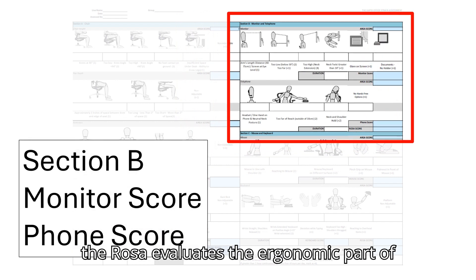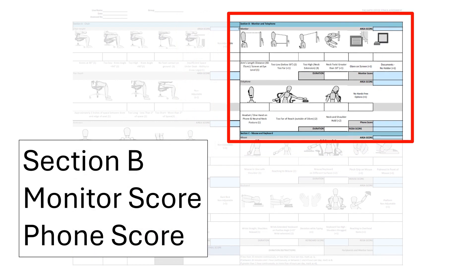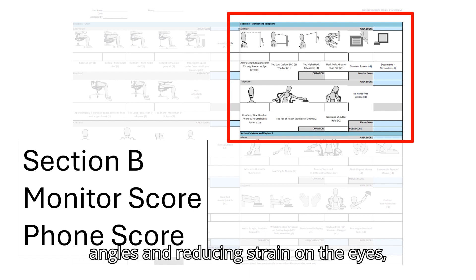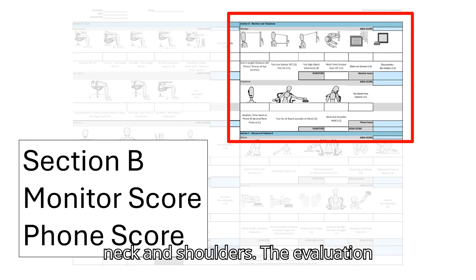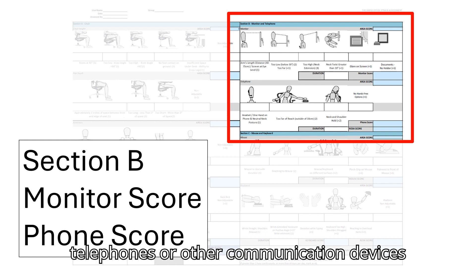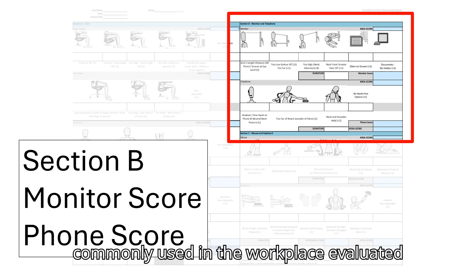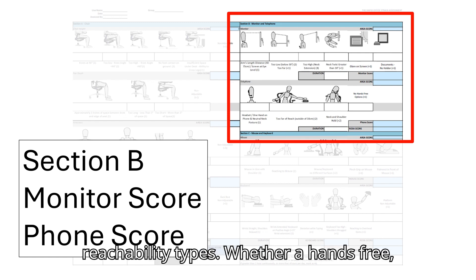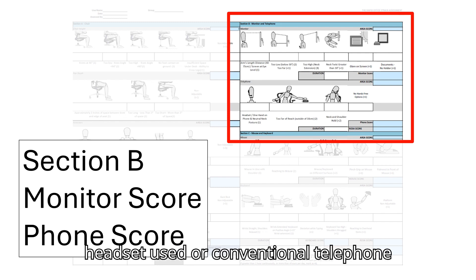Section B of ROSA evaluates the ergonomic aspects of monitors and telephones in the workplace. Monitor setup is crucial for promoting comfortable viewing angles and reducing strain on the eyes, neck, and shoulders. Evaluation criteria include monitor height, distance, tilt, and swivel. Telephones and other communication devices are evaluated by their placement, accessibility or reachability, and type — whether a hands-free headset or conventional telephone is used.